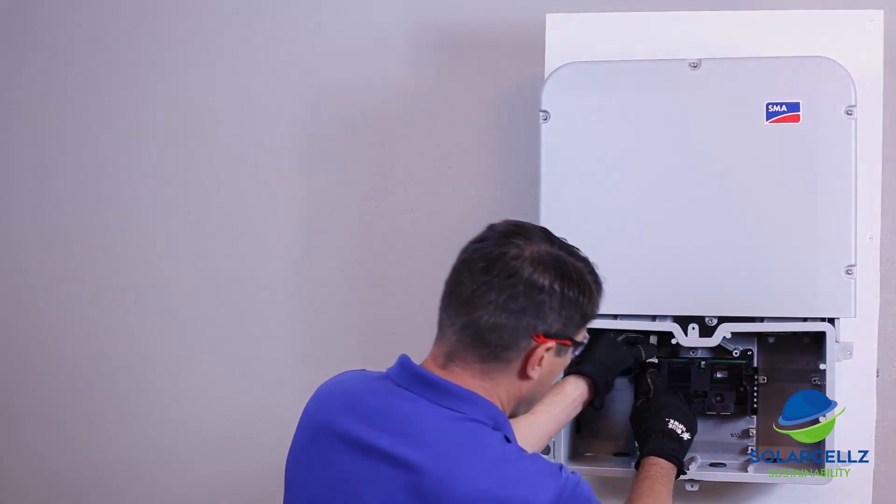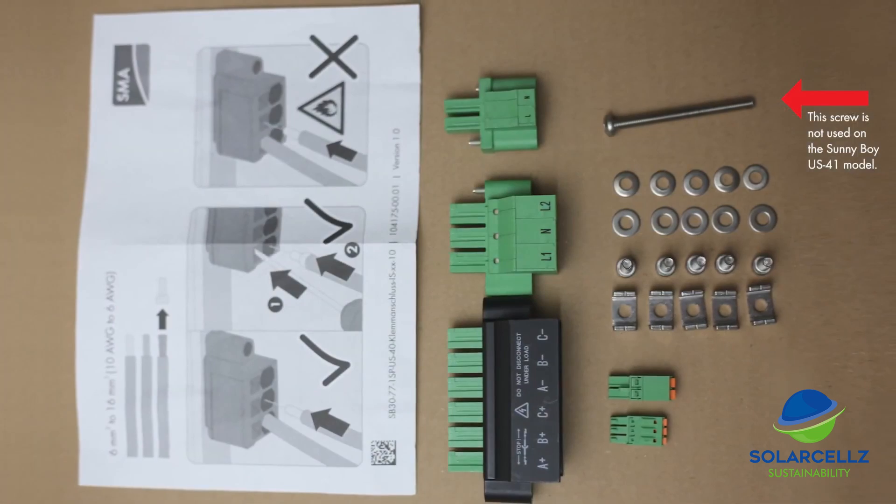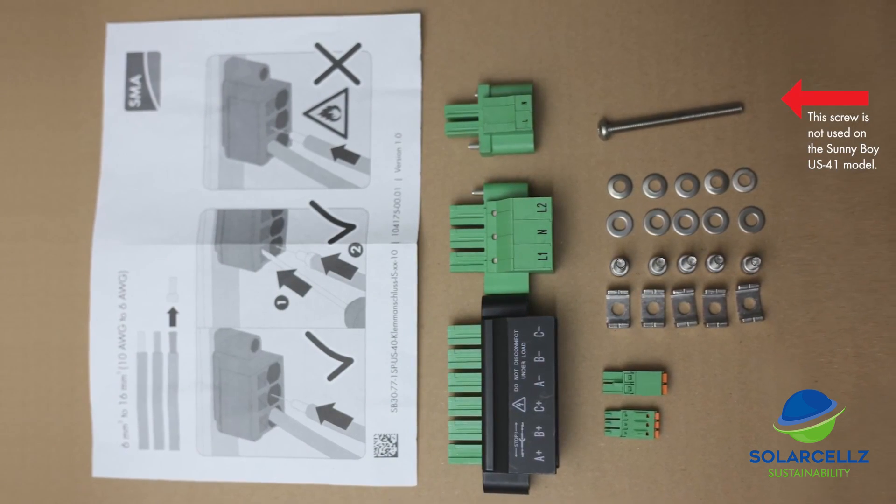Reattach the ribbon cable to the communications board. SMA recommends installing all of the hardware from the accessories bag into the inverter, even if it is not being utilized.